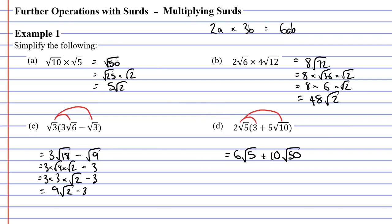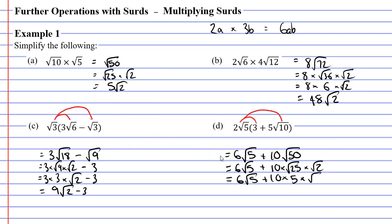We now need to simplify. We can't simplify 6 root 5, but we can simplify the second term. We split it into 10 times the square root of 25 times the square root of 2, since 25 times 2 is 50. The square root of 25 is 5, so we get 6 root 5 plus 10 times 5 times root 2, and our final answer is 6 root 5 plus 50 root 2.